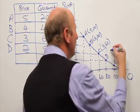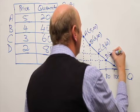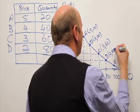So the coordinates associated with point B is 2 grand and a quantity of 80.